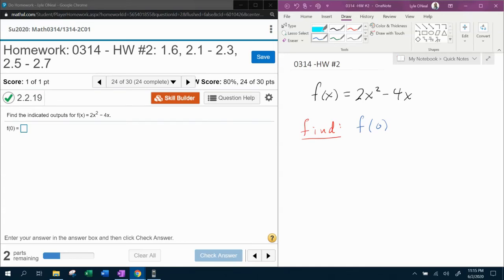All right, here we go. Question number 24 from our 0314 homework number 2 in MyLabMath. It says, find the indicated outputs for the given function. And so they have given me the function f of x equals 2x squared minus 4x.